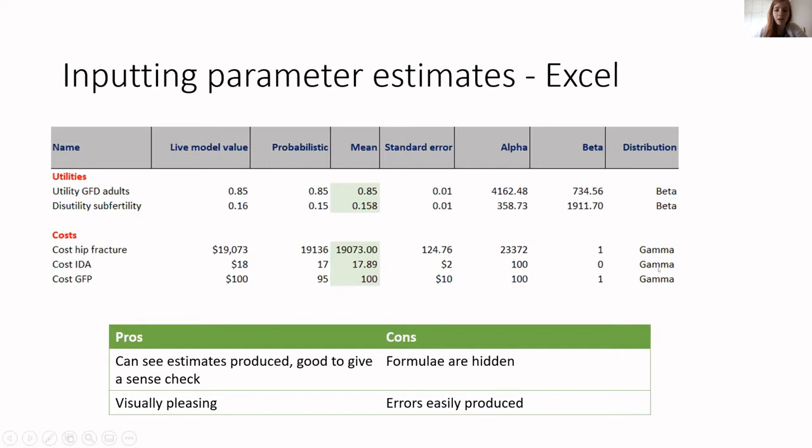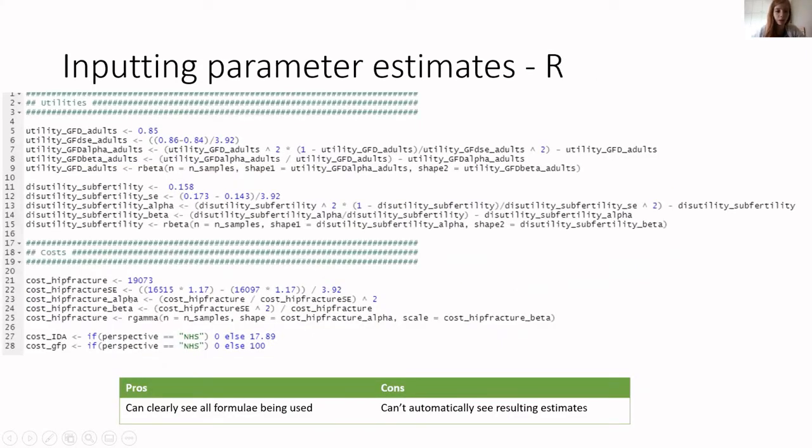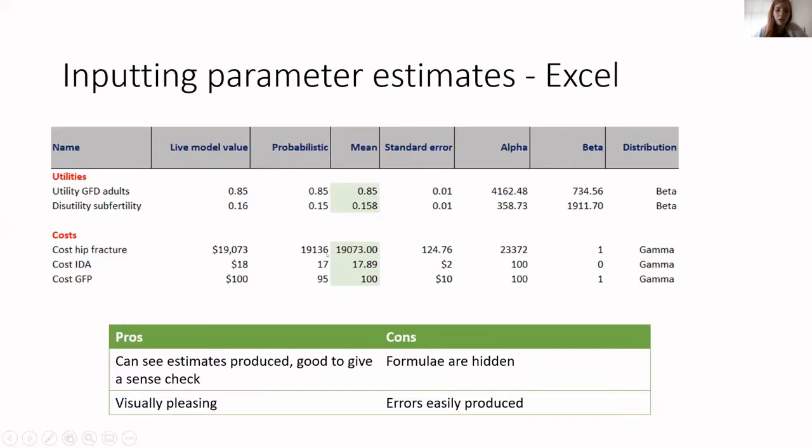What I like about this in Excel is that you can see the estimates produced. So it's good to give a sanity check. You can see, oh yeah, based on those formulas that I used, this is the estimate it gives, and that looks right. A con is that you can't actually see the formula. So there could be errors within there. And also, I quite like just the way this looks in Excel. So you have your sheet where you have all your parameters, and it's very easy to see. Okay, yeah, that's a mean estimate I'm using. But obviously it's a lot easier for errors to be produced because you can't see the code. All you can see is the resulting estimates.